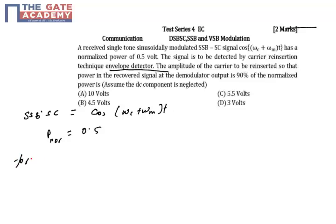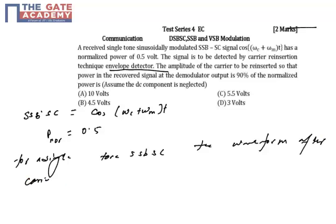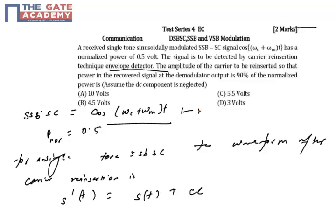For a single-tone SSB-SC signal, the waveform after carrier reinsertion is S'(t) = S(t) + CL, where CL represents the reinserted carrier. Expanding the SSB-SC signal, it becomes cos(ωc + ωm)t + A·cos(ωcT).